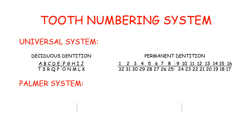For permanent dentition, this system uses numbers 1 to 8 for right maxillary teeth and numbers 9 to 16 for left maxillary teeth. Numbers 17 to 24 for left mandibular teeth and numbers 25 to 32 for the right mandibular teeth.